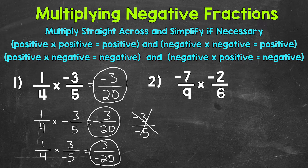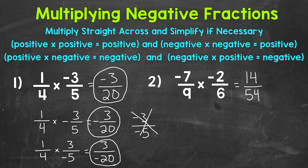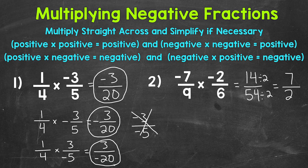Let's move on to number two, where we have negative seven ninths times negative two sixths. Multiply straight across: negative seven times negative two gives us a positive 14, and nine times six is 54. Now we can simplify this fraction — we have a common factor of two. Dividing both by two: 14 divided by two is seven, and 54 divided by two is 27. That's in simplest form since the only common factor between seven and 27 is one.